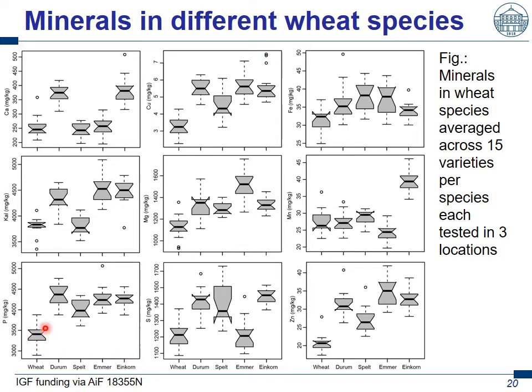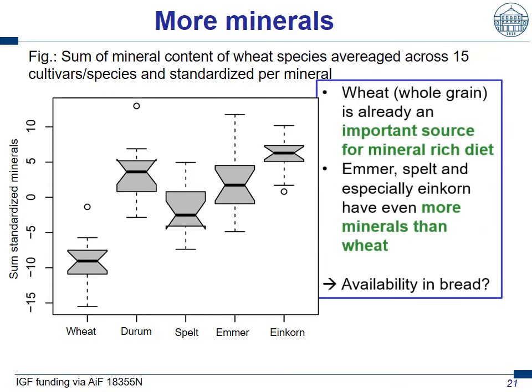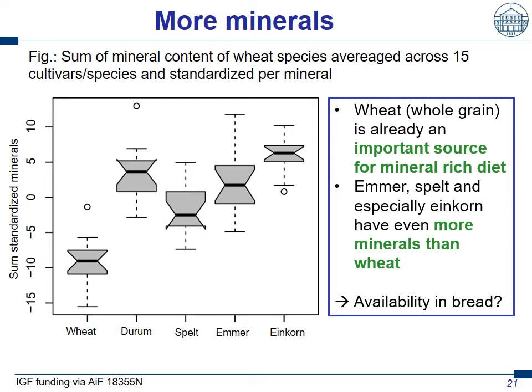Taking all minerals into account, standardizing them and summing up, we see bread wheat here and spelt, emmer, einkorn considerably higher — showing that spelt, emmer, and einkorn have a higher mineral content than bread wheat. To summarize: wheat, and importantly only when we eat whole grain wheat, is already an important source for a mineral-rich diet. And emmer, spelt, and especially einkorn have even more minerals than wheat. That's very interesting for a whole grain diet.